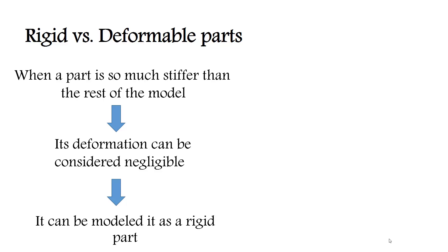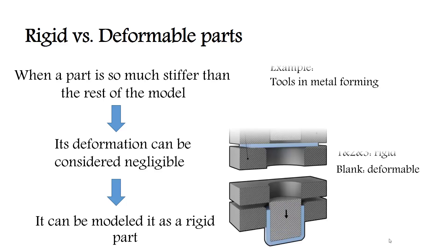Then we can model it as a rigid part. As an example, the tools in metal forming can be considered as rigid parts. In deep drawing process, punch, die, and blank holder are rigid parts and blank is a deformable part.